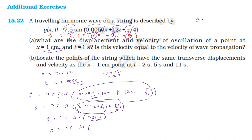Theta is equal to n into 360 plus alpha. Computing the angle: theta is equal to 732 minus 0.8. Theta is equal to n into 360 plus or minus alpha.